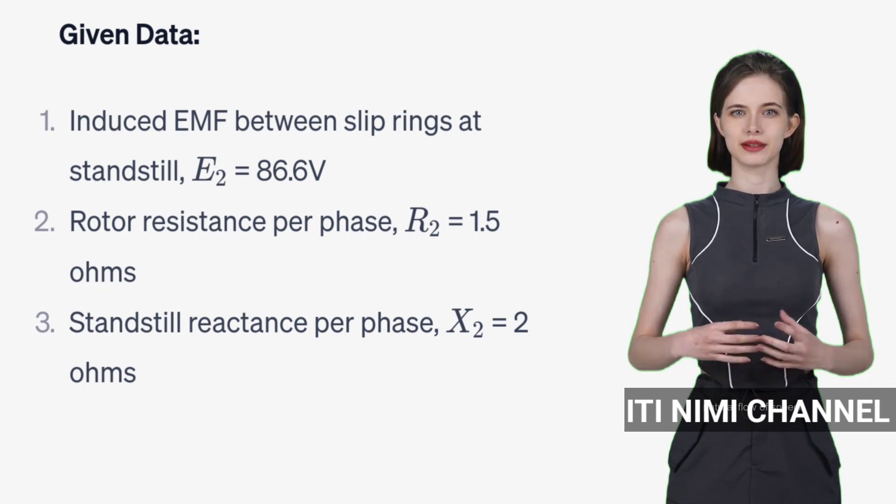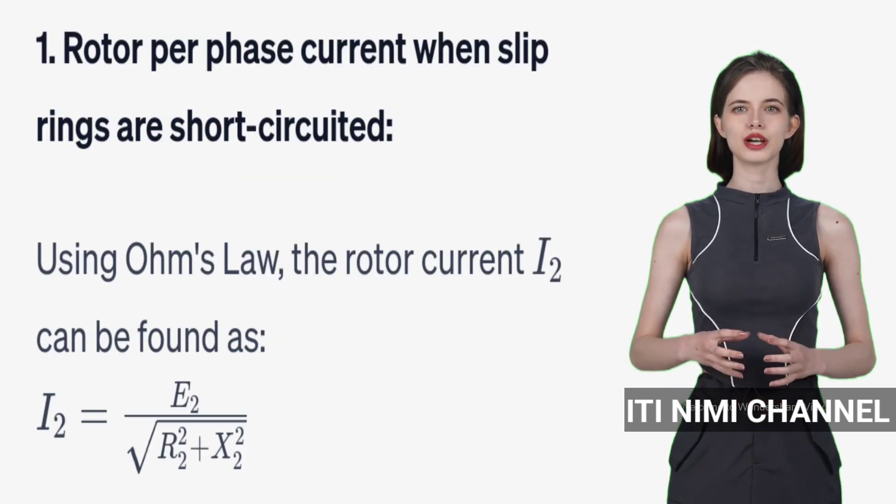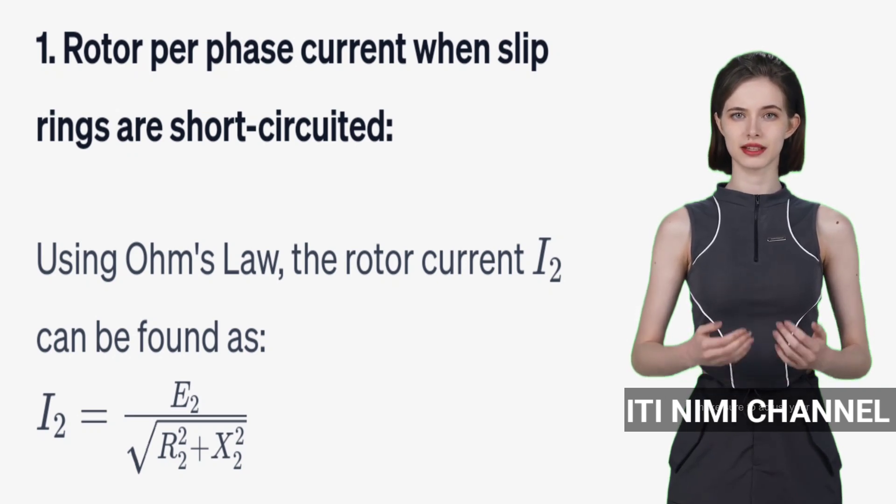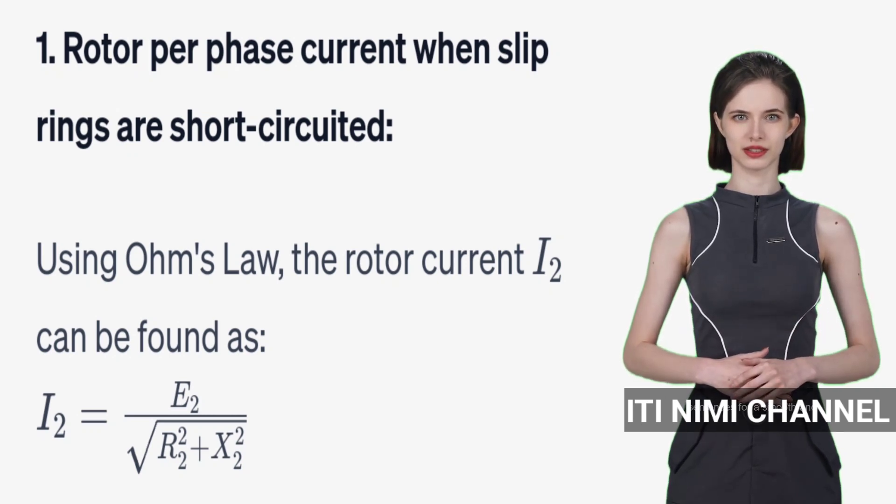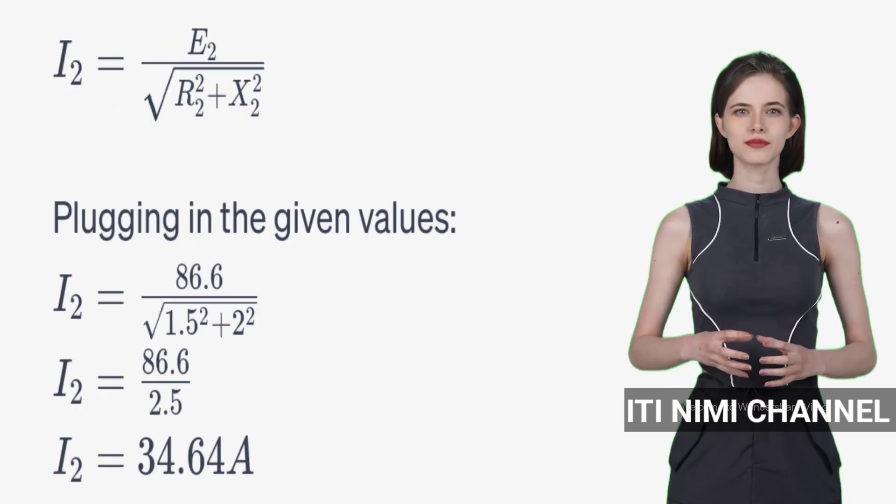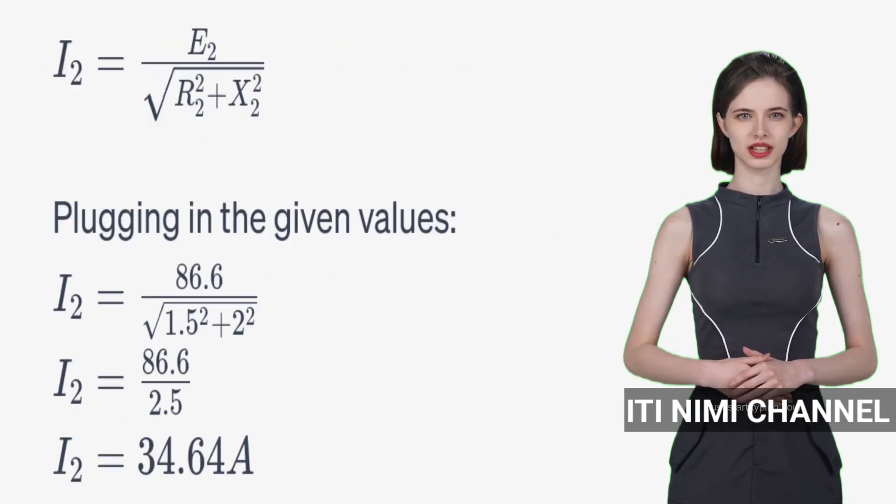First, we will find the rotor current when the slip rings are short-circuited. Using ohm's law, we divide the induced EMF by the square root of the sum of the squares of resistance and reactance. This gives us a rotor current of approximately 34.64A.